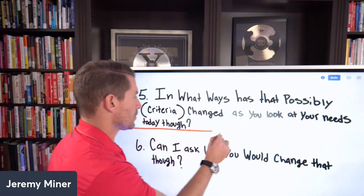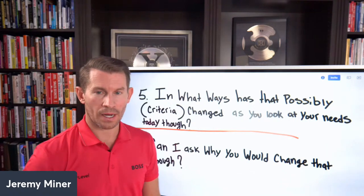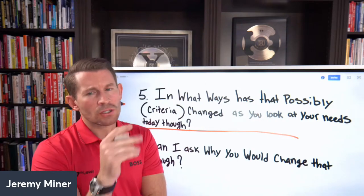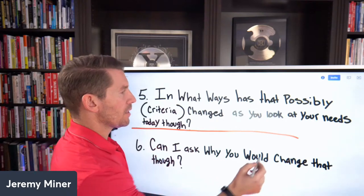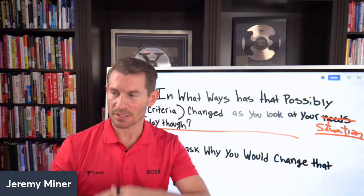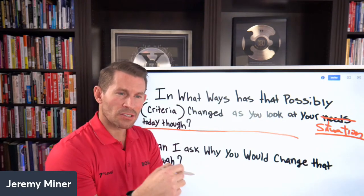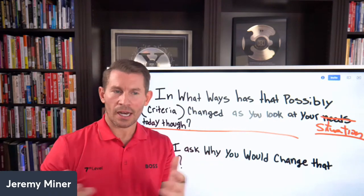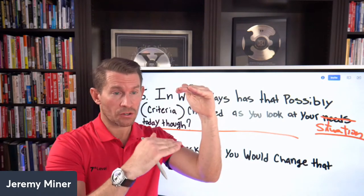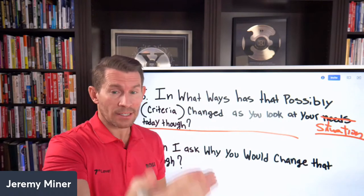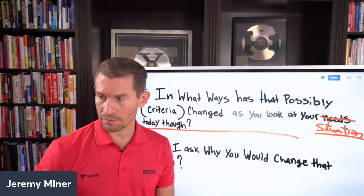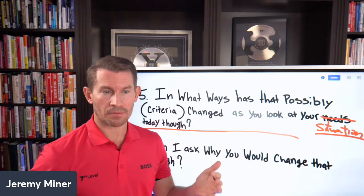After they tell you their selection criteria, you ask the follow-up using verbal cues: 'So in what ways does that possibly change as you look at your situation today though?' Use 'situation' — not 'needs.' 'Needs' is an overused sales word. This question allows both of you to see that their current situation is different now compared to when they started with that vendor years ago, opening the door to help them find problems they didn't think they had.